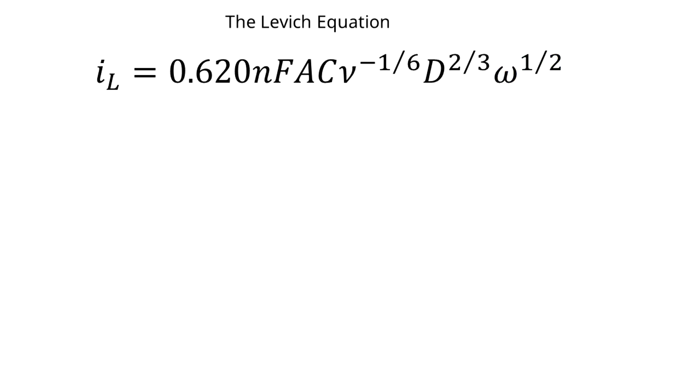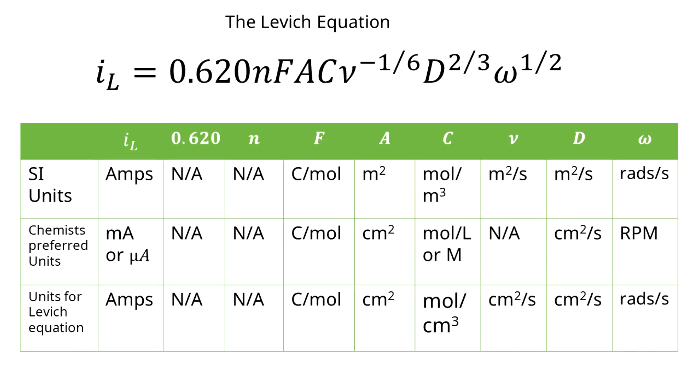When determining the diffusion coefficient, there's several considerations to make regarding the units. Below, you can see a table of each parameter in the Levich equation and its corresponding units. The units are listed on whether they are international system of units, SI units, the units chemists and electrochemists prefer to use, and units used in the Levich equation. I've highlighted three key areas where units can cause problems in determining the diffusion coefficient.